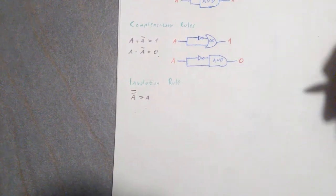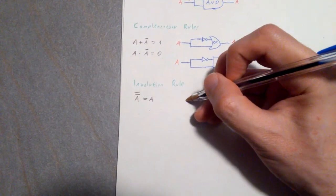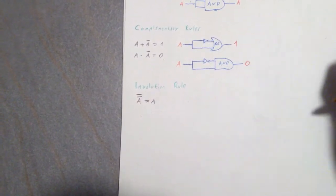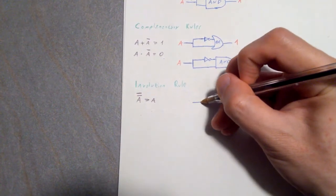So in general form, it basically means that if you have an even number of NOT gates, then the output is just going to be like the input.